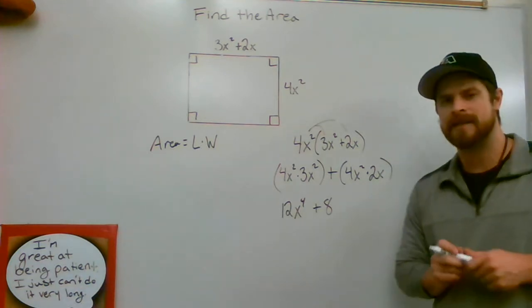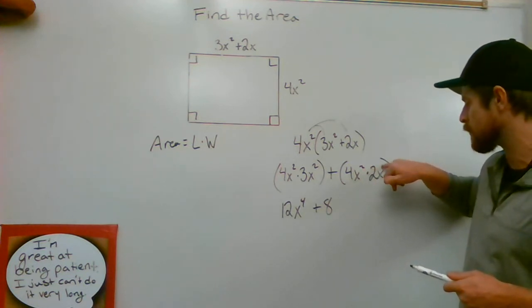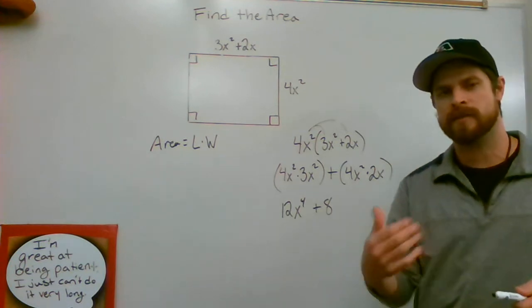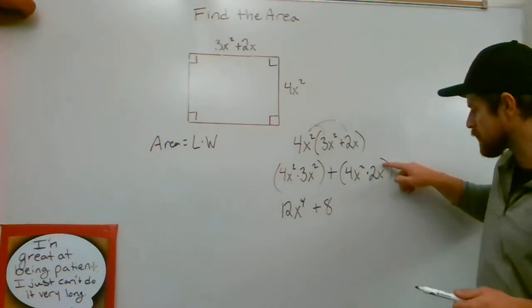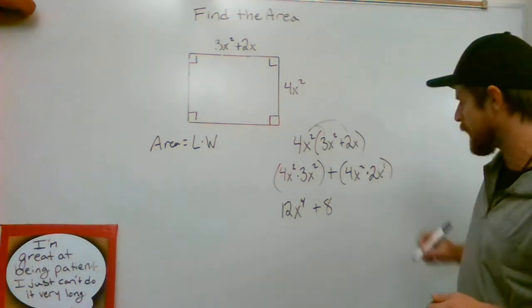Now, what I will see a lot of times from kids is they're going to write 8x squared because they see the 2 and they don't see anything here. But there actually is an invisible exponent there. It's just not shown. When you have an x, it is x to the first power.